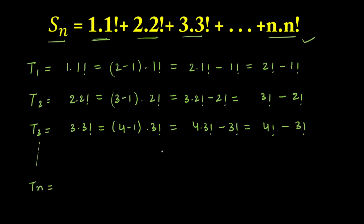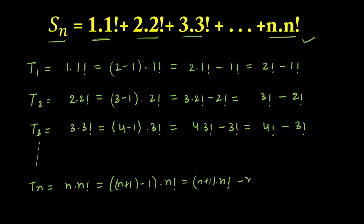For the nth term: n·n! can be written as (n+1 − 1)·n!. Following the same pattern, this gives (n+1)·n! − n!, which equals (n+1)! − n!. As you can see, this is a telescopic series.